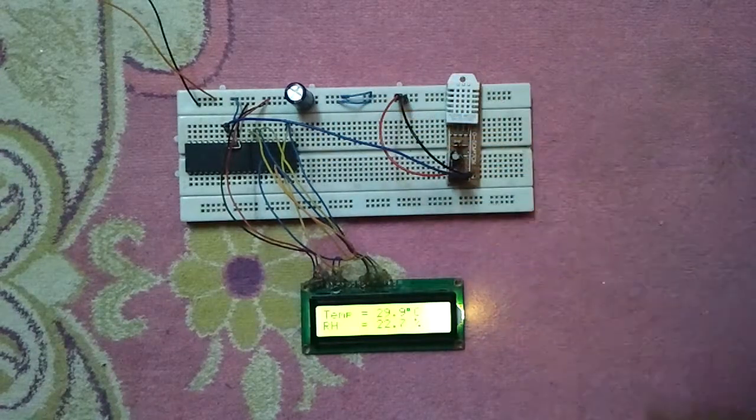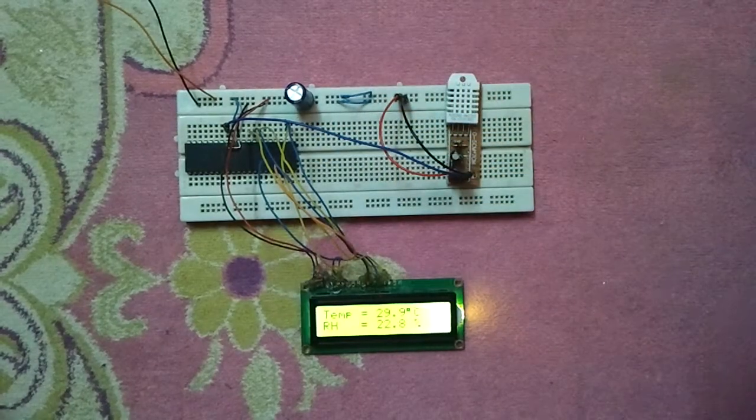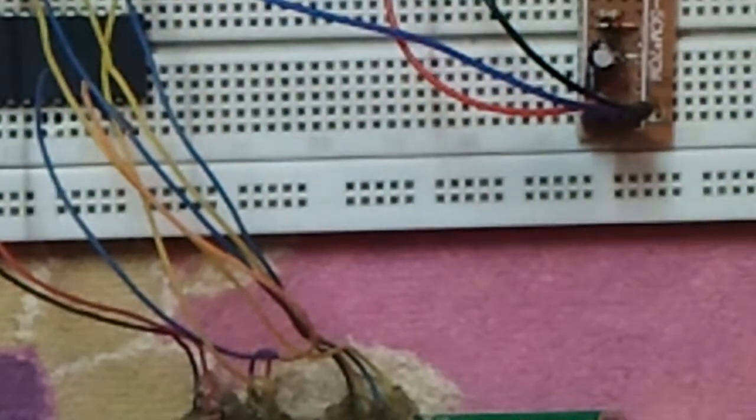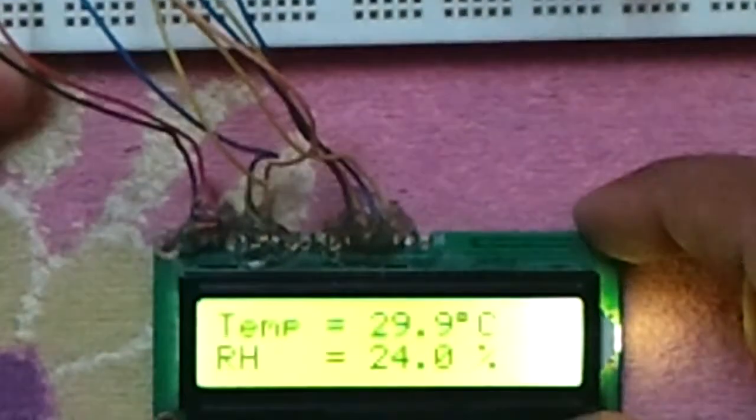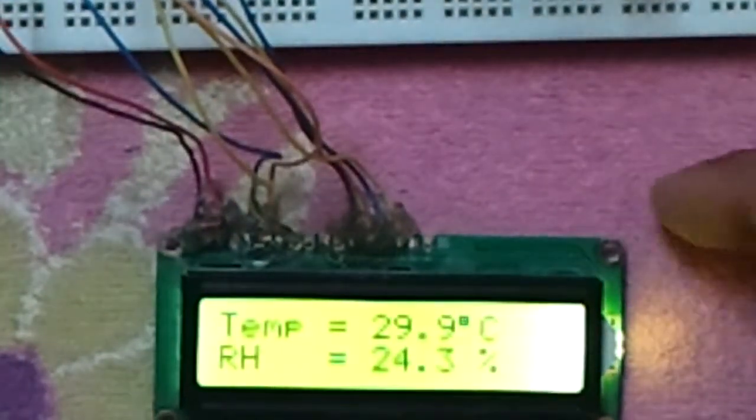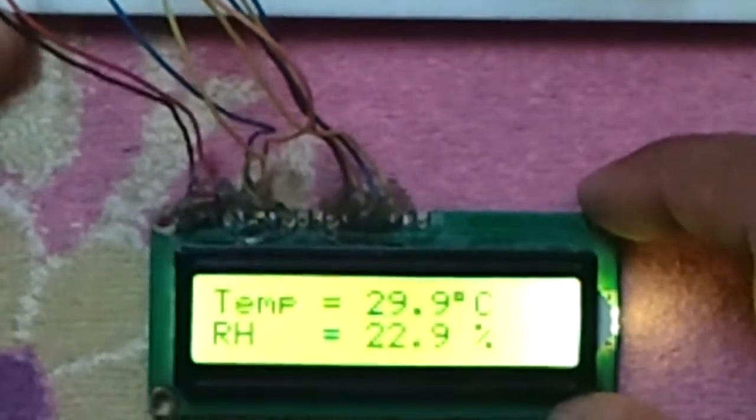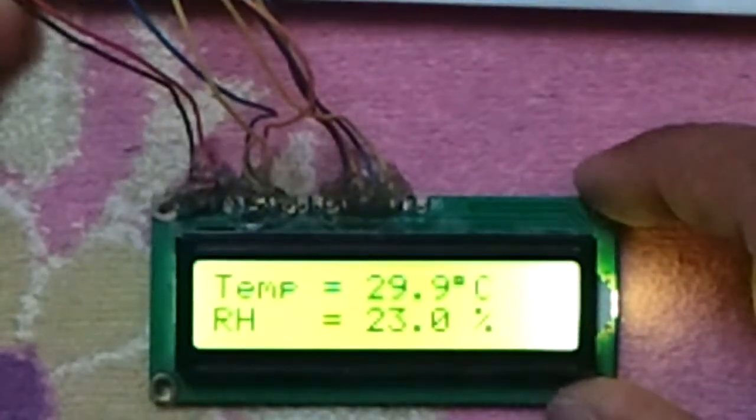The LCD displays relative humidity and temperature. As we can see, it's 29.9 for the temperature and 22 for the relative humidity.